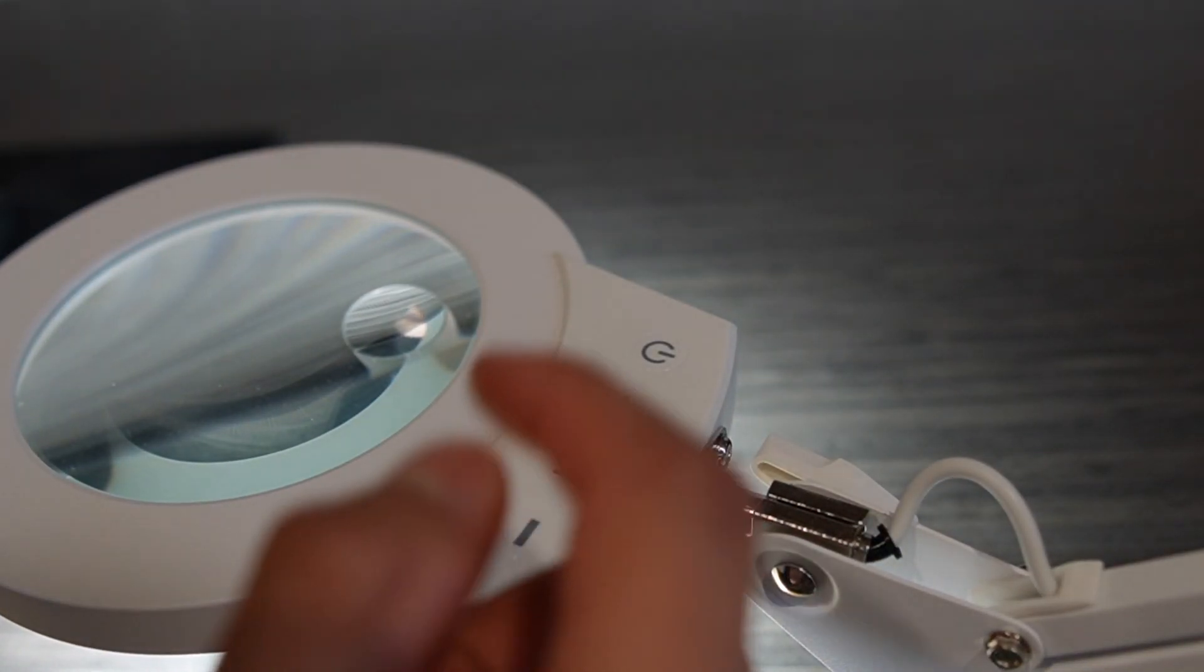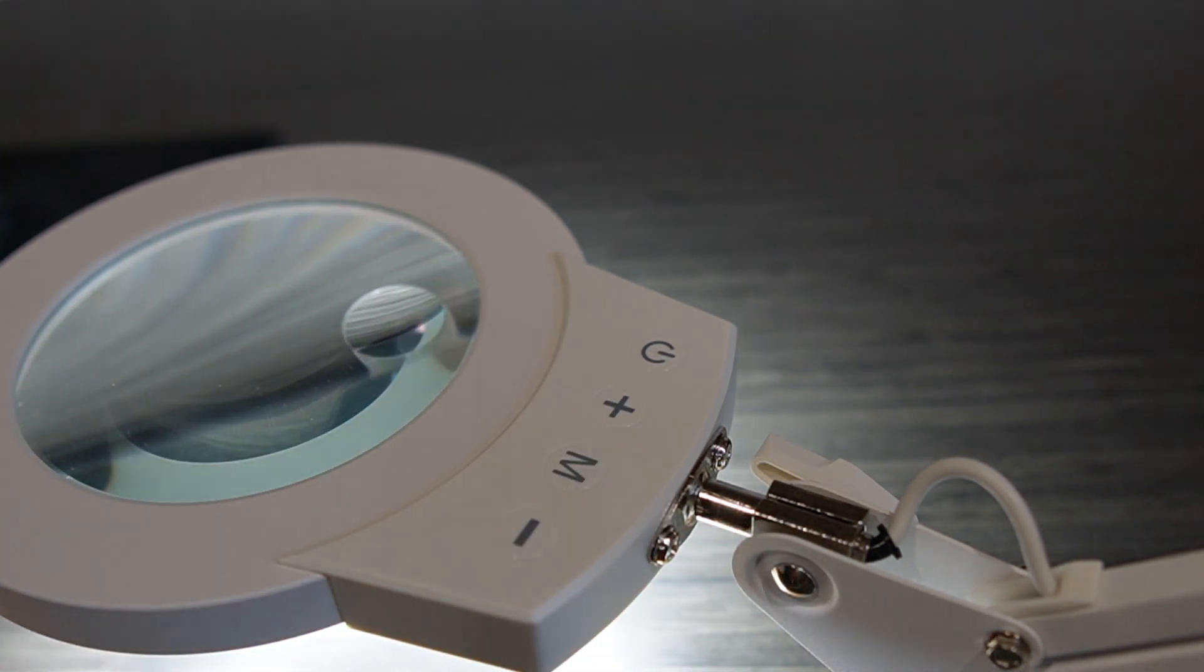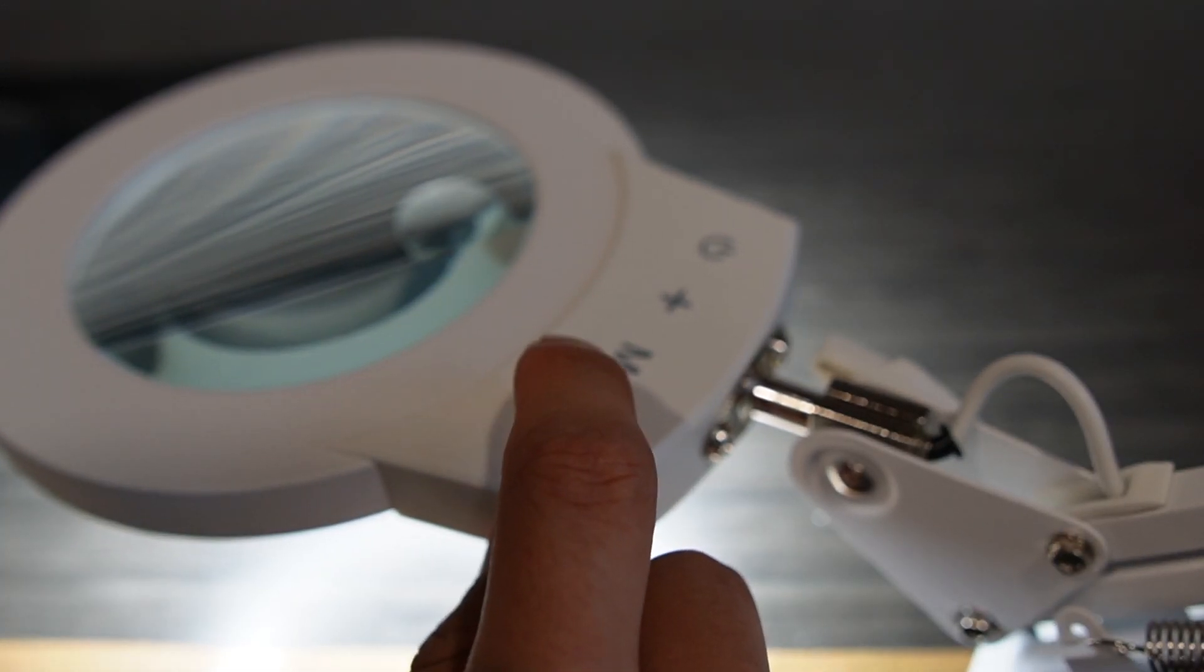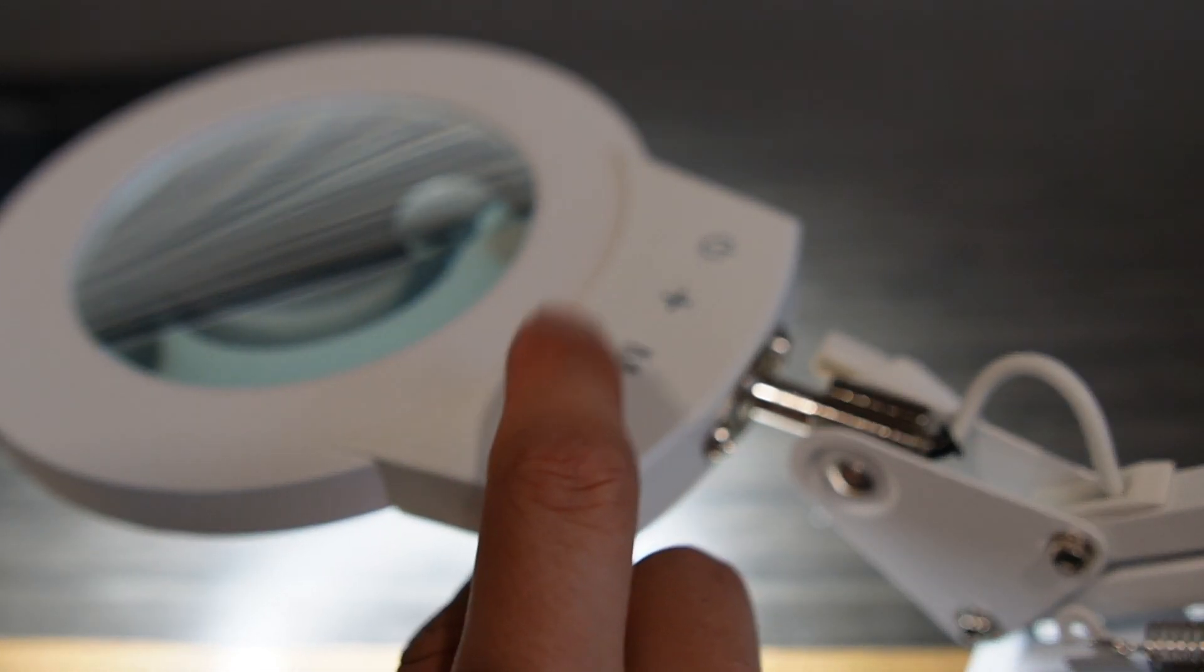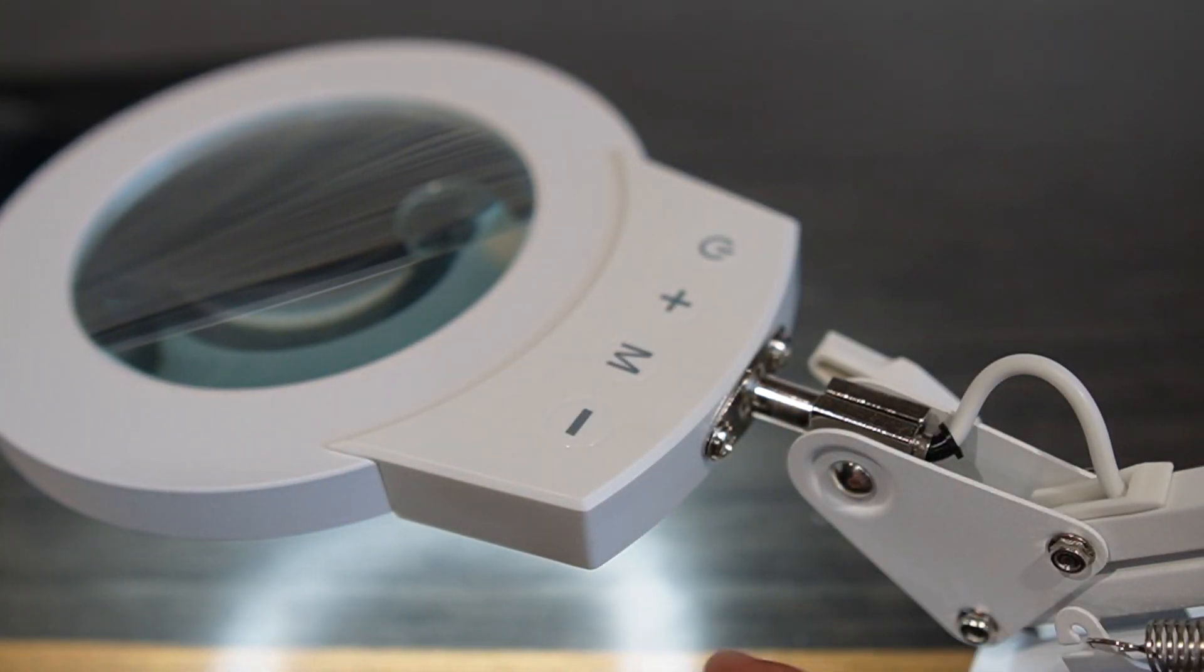We have the plus and minus, and that controls the intensity, the brightness. Right here is the brightest you see. If I tap it, nothing happens. And if I dim it, I get one, two, three, four, five, six, seven, eight, nine. So nine different options.